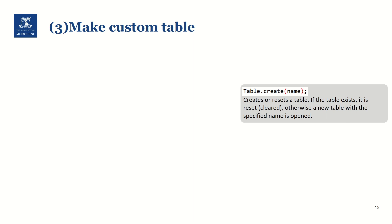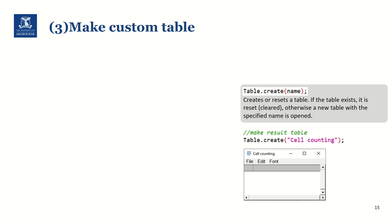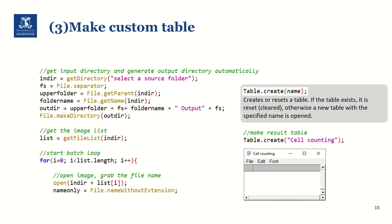The function to create a table is simply called table.create, and we can add the title of our table inside the bracket. This function will create or reset a table — if there is no table, it will open a new table with the specified name. But if a table with the same name already exists, it will reset the table, meaning all the contents will be cleared. So we need to use this carefully, placing it only once at the beginning of the script unless we want to reset the table in each iteration. I will name my table 'cellCounting', and this will generate an empty table with that title. We will set the column headings and details when we have the values to log later on. We can place this part before the for loop starts.